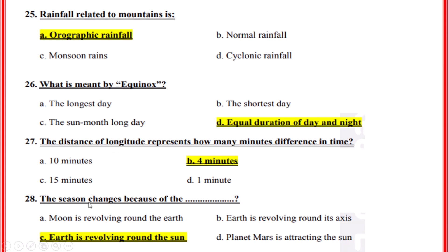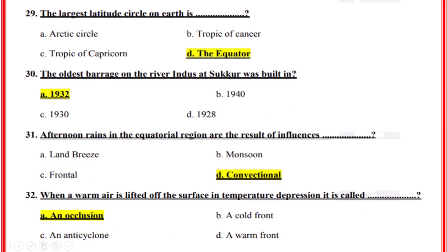The seasons change because of? Correct option: C, Earth is revolving around the Sun. The largest latitude circle on Earth is? Correct option: D, The equator.